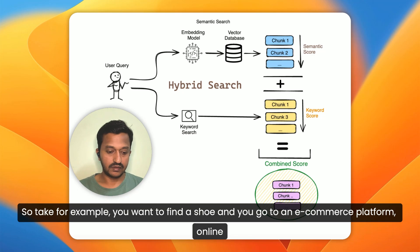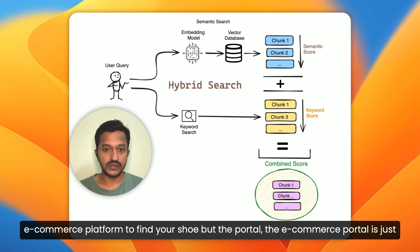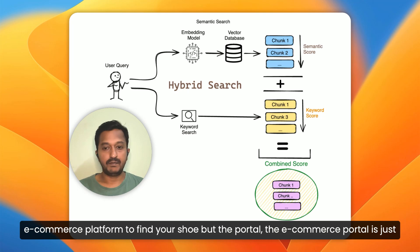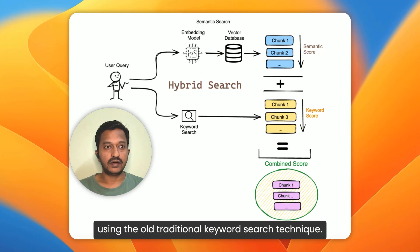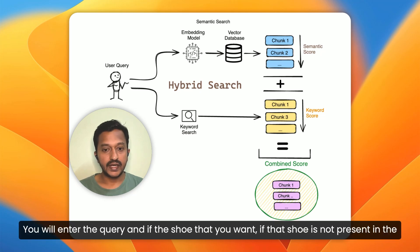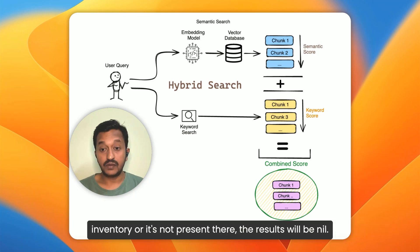Take for example, you want to find a shoe and you go to an online e-commerce platform to find it, but the portal is just using the old traditional keyword search technique. You enter the query and if that shoe is not present in the inventory, the results will be nil.